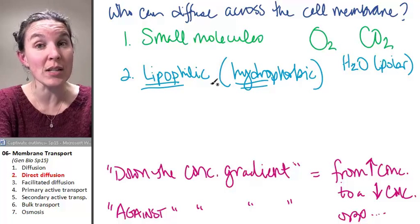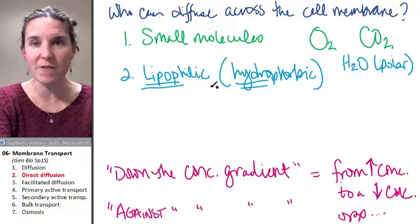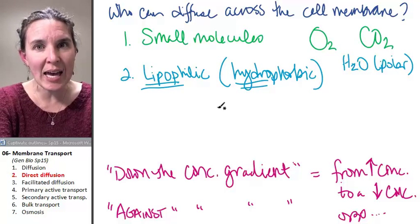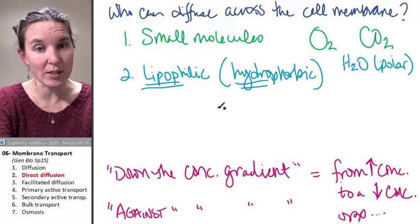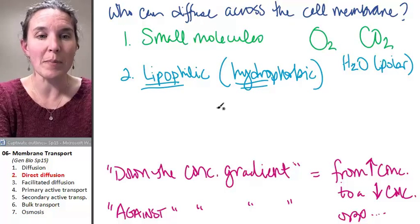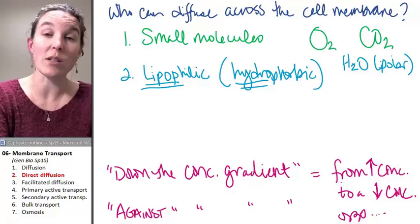Okay, so those are your rules that you will use to evaluate whether or not a substance can just diffuse across the cell membrane on its own. If it can't diffuse across the cell membrane all by itself, then we might need a transporter to help make it happen. And that is facilitated diffusion. So let's look at that next.